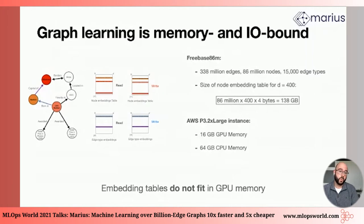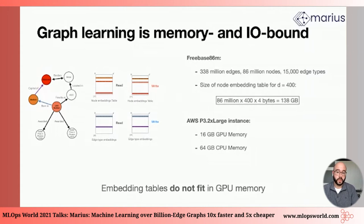However, if you start focusing on really large-scale graphs and real-world cases, you will find that these representations really don't fit in GPU memory. For instance, if you take Freebase, which has 86 million nodes and 300 million edges — still a relatively manageable graph — and you try to learn representations of size 400, you need 138 gigabytes of data, which far exceeds the memory of both CPU and GPU of a typical compute node in the cloud. So really, embedding tables do not fit in memory.